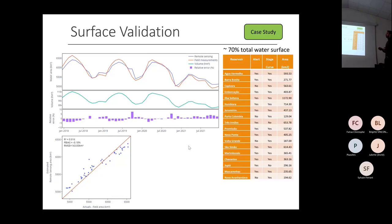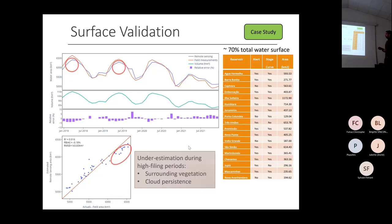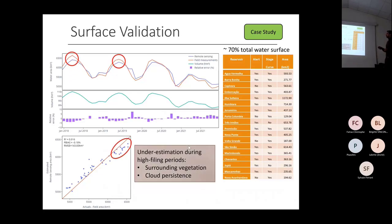In blue, we have results from our remote sensing processing. We have a very good agreement and a coefficient of determination of 0.916. What we can see is that we usually have an underestimation during high filling periods.